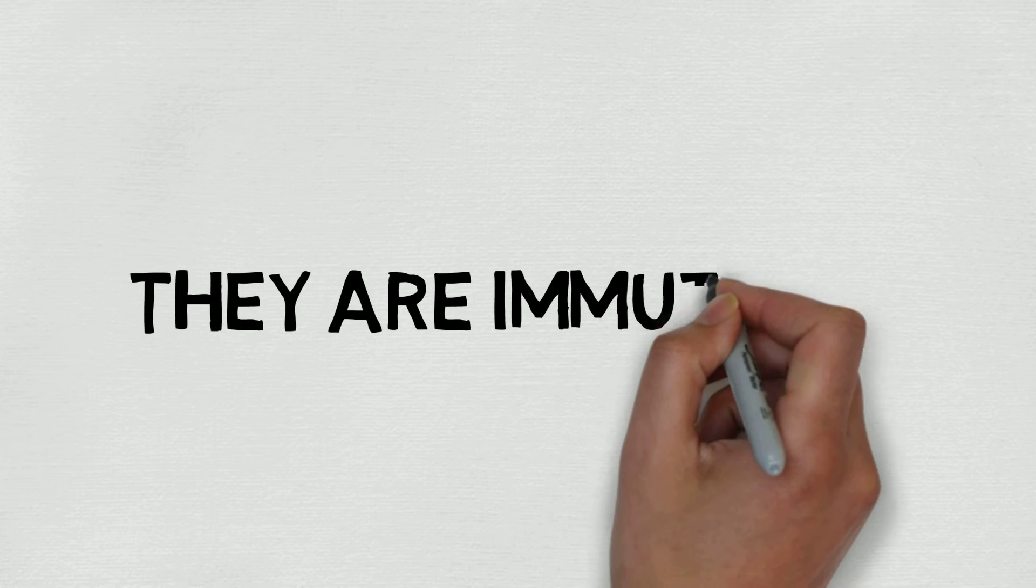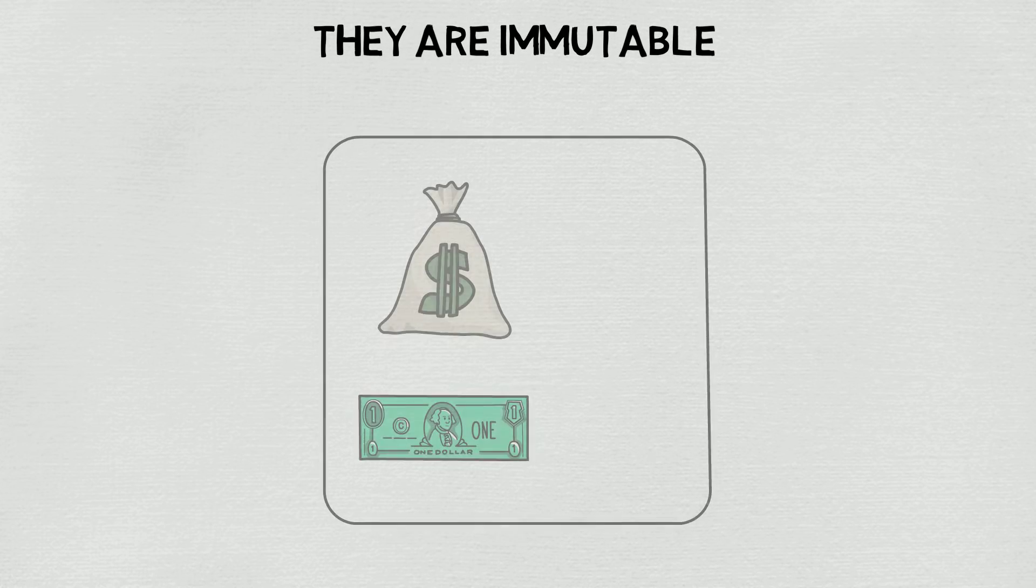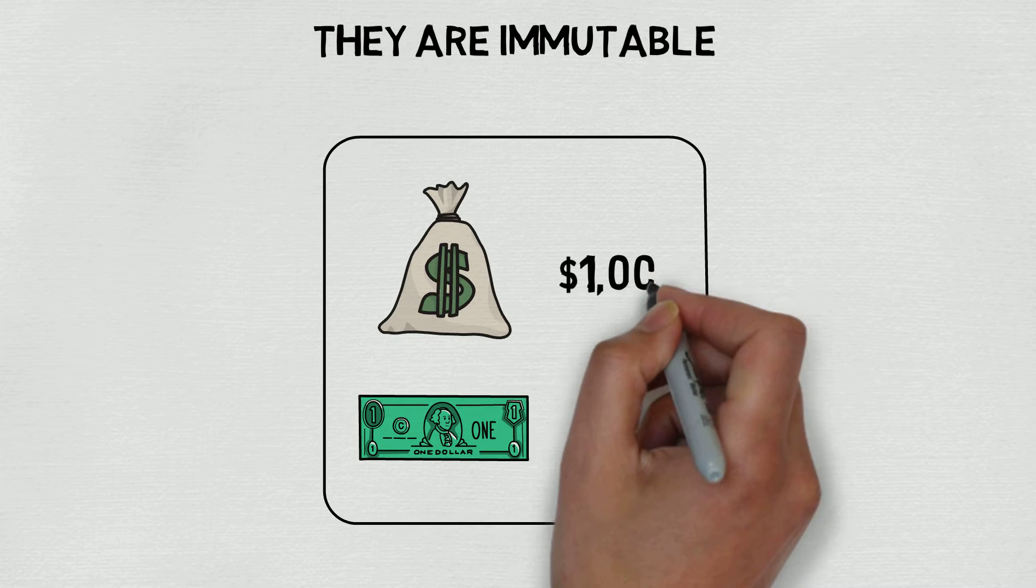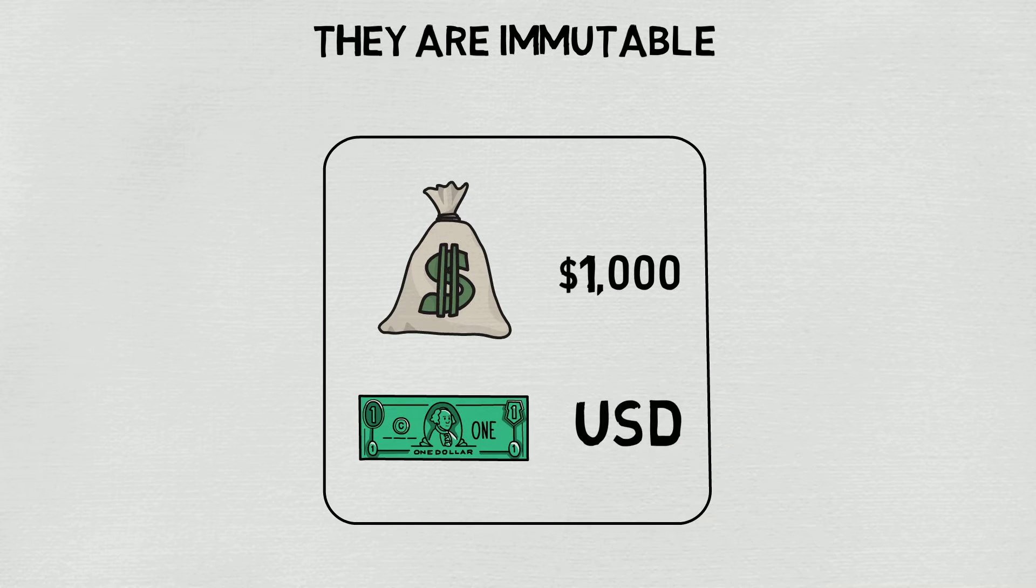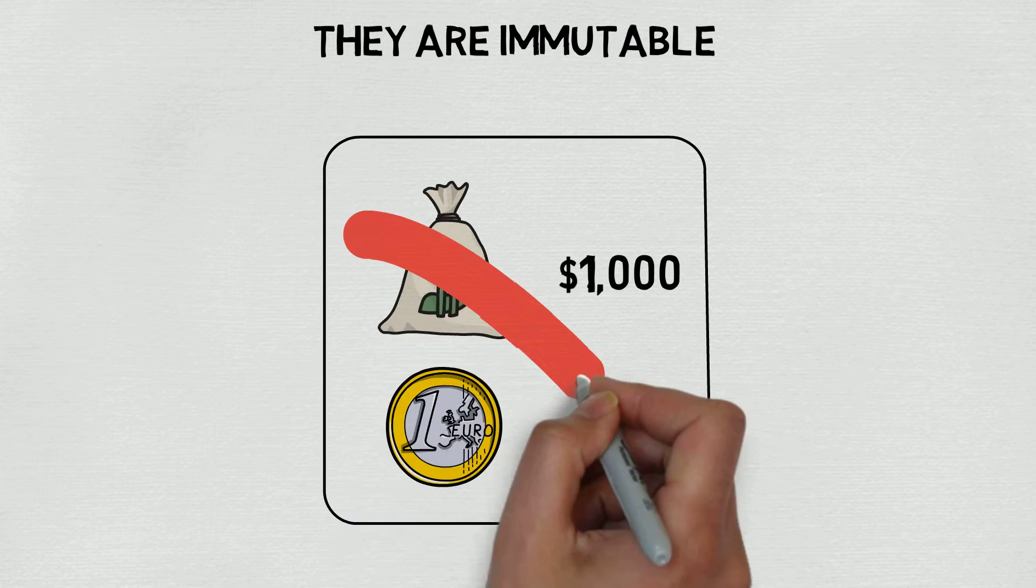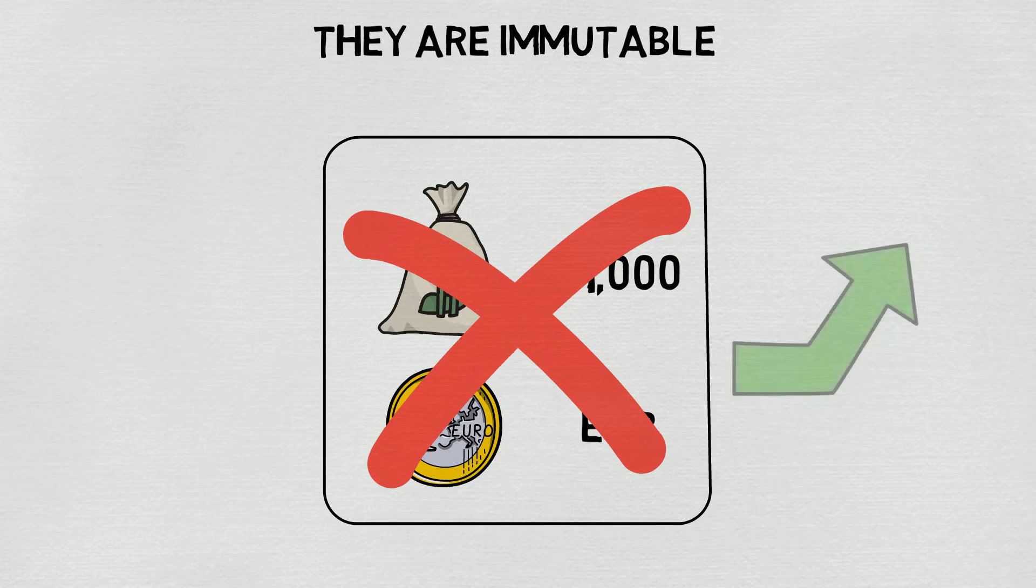The second principle of value objects is that they are immutable. If we think about our bank account example, and suppose we have a balance of a thousand US dollars, we can't just suddenly change the currency and decide to have a thousand euros. That just doesn't make sense because euros are currently worth more.